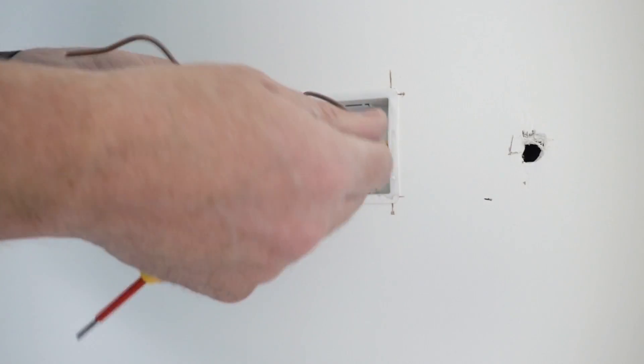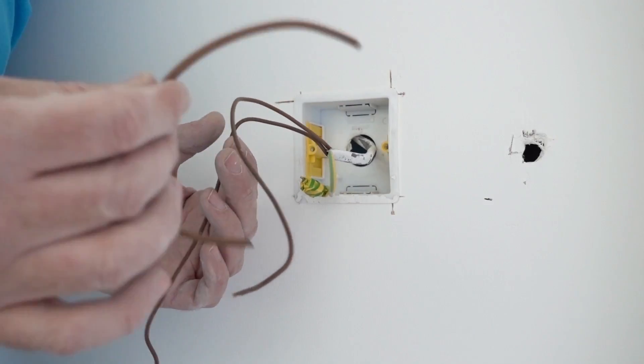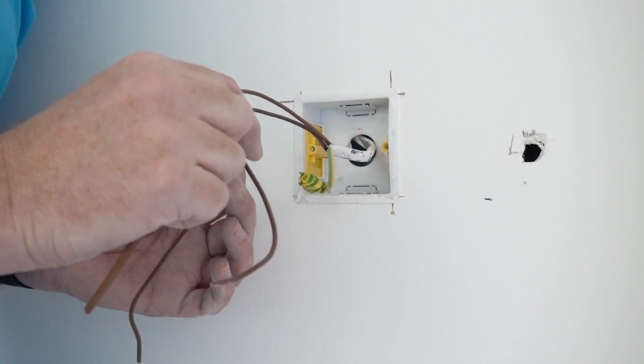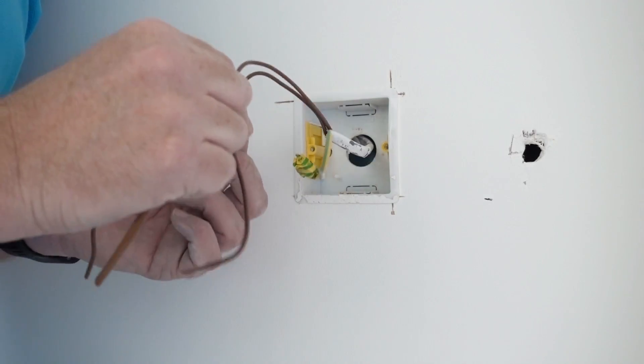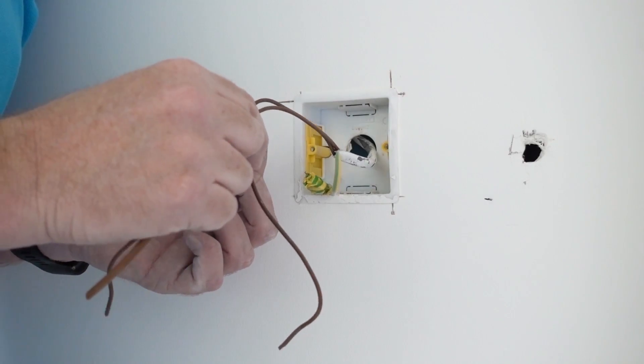Now you might have noticed already that I've got two brown cables. You can do regular twin and earth with a brown and a blue, but if you're doing that you just need to put a bit of brown sleeving on the blue wire to show that both of these are live wires. There's no neutral in here, it's just a switch in the live.